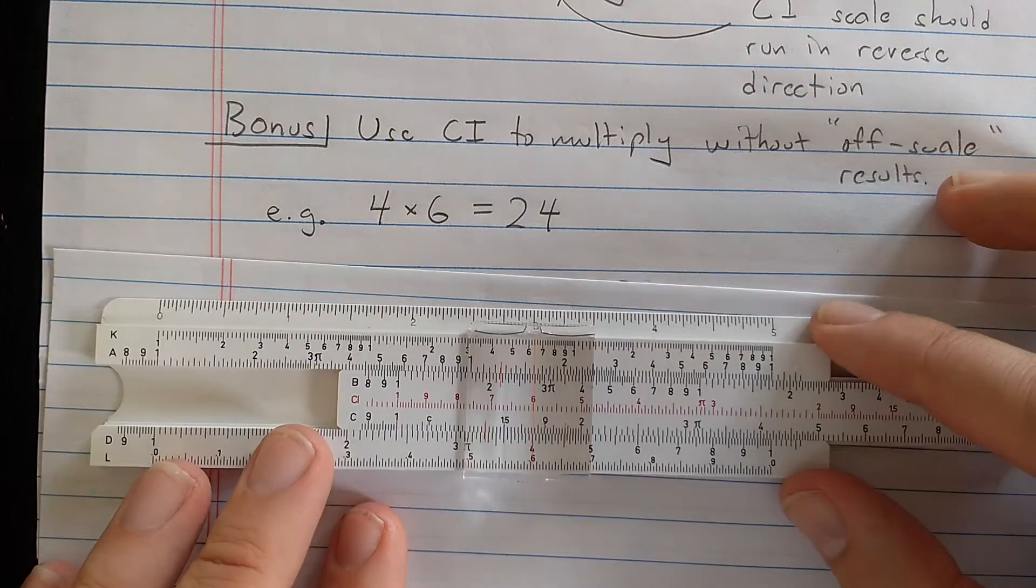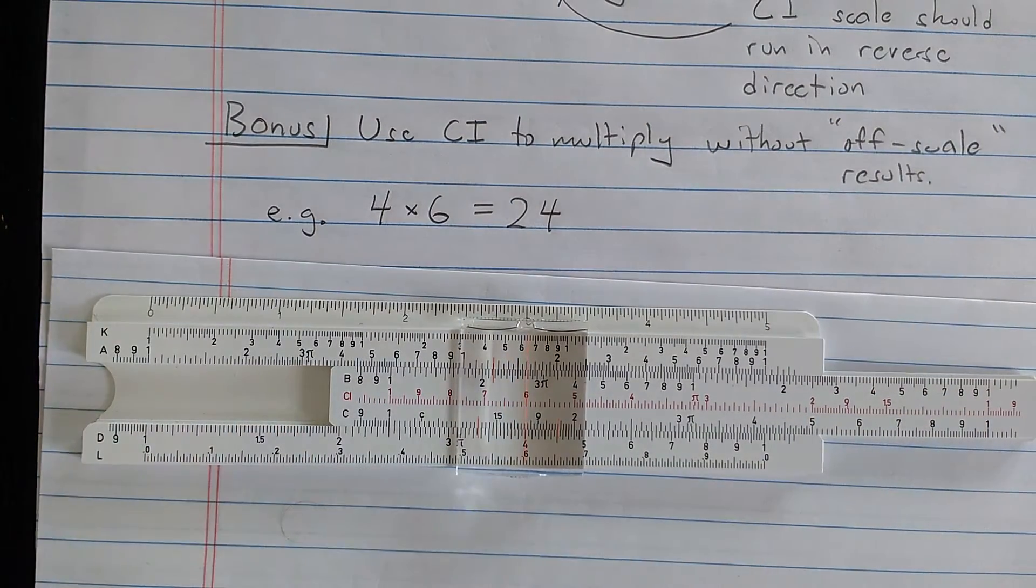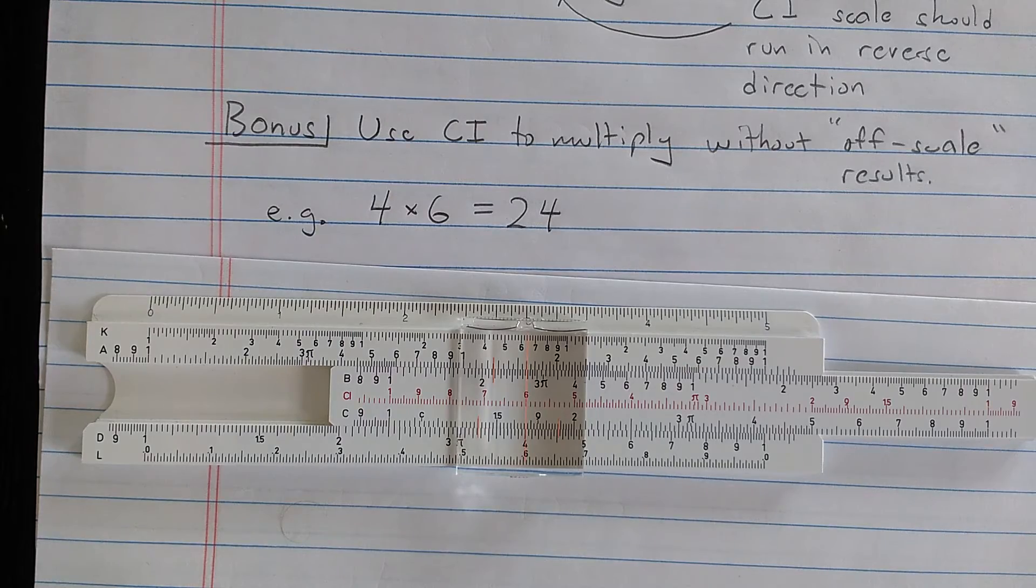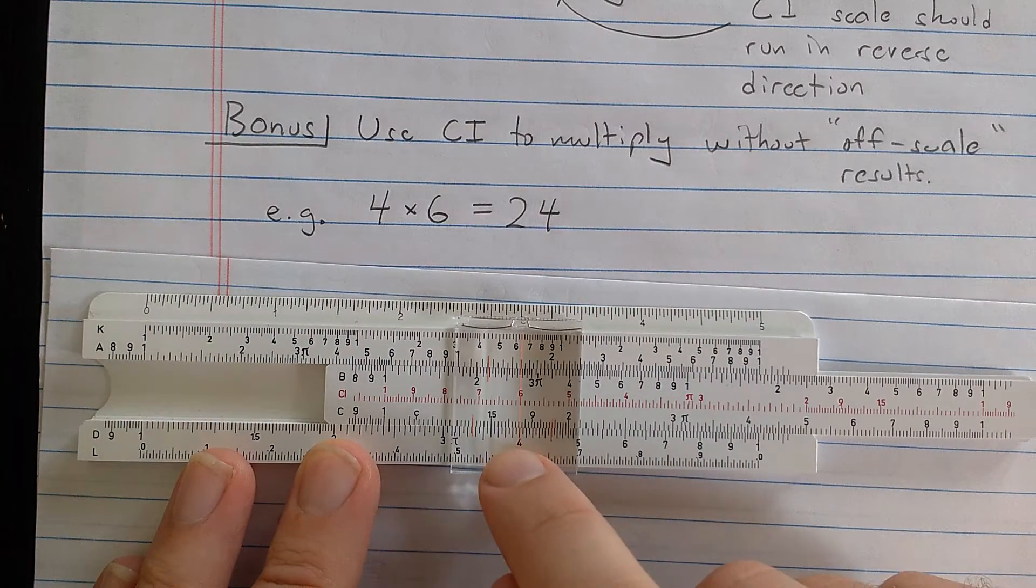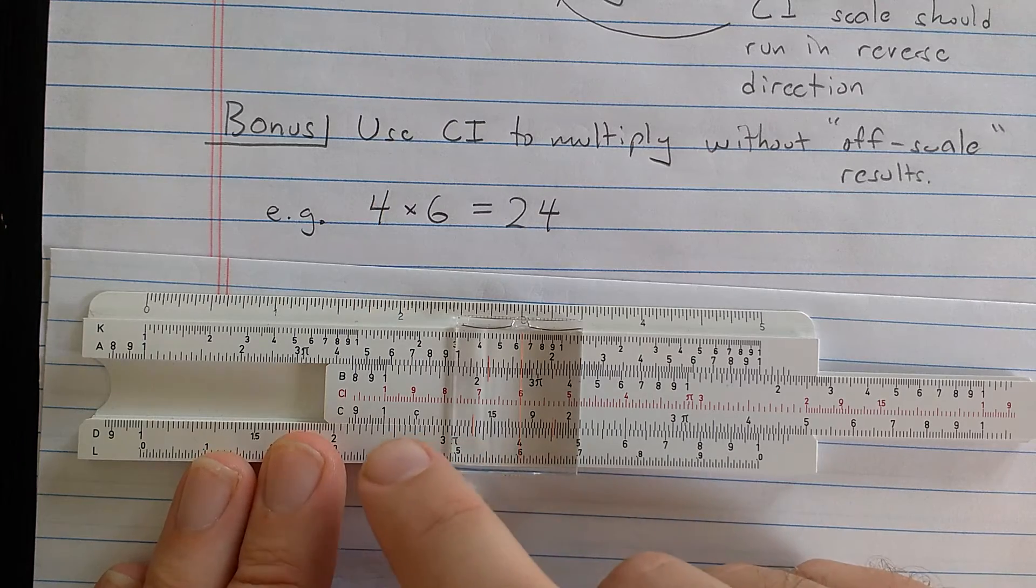The advantage is that since you're doing the use the same way that you do division with the C scale, in other words, aligning the two numbers and not aligning the one number with the index, you'll always have one of the indices on scale.